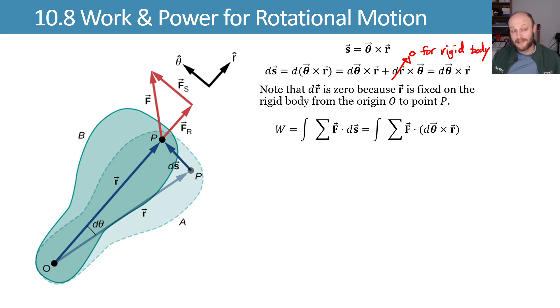Then we get some fancy identity stuff using the fact that a dotted with the quantity b cross c is equal to b dotted with the quantity c cross a. We can rewrite this. And if you don't believe this, you can try writing it out and proving to yourself that this actually does work.